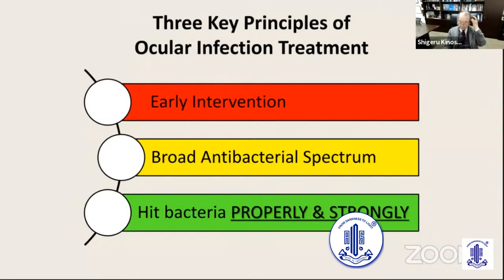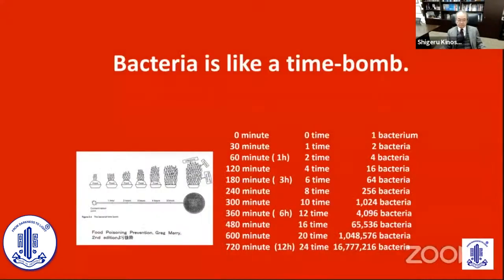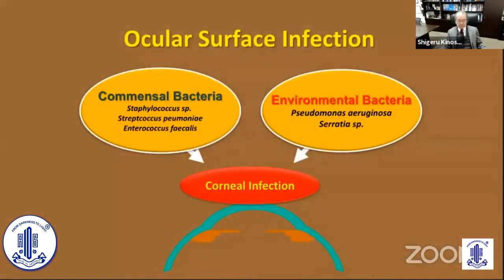There are three key principles of ocular infection treatment: early intervention, broad antibacterial spectrum, and hitting bacteria properly and strongly. Bacteria are like a time bomb — within one day, 24 hours, they will multiply up to 200 million starting from just one organism.